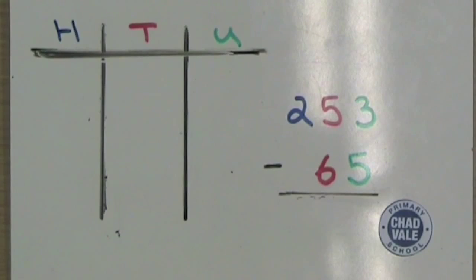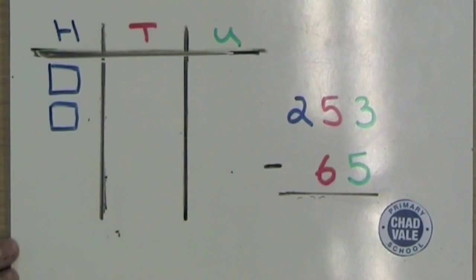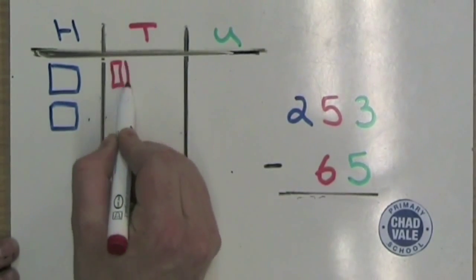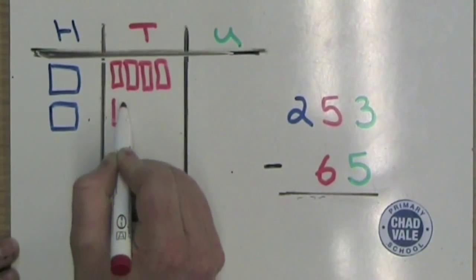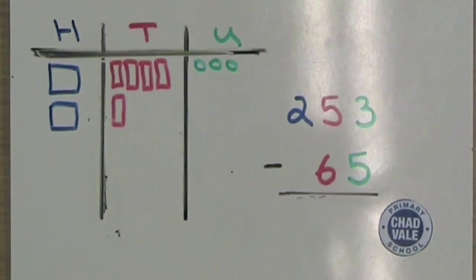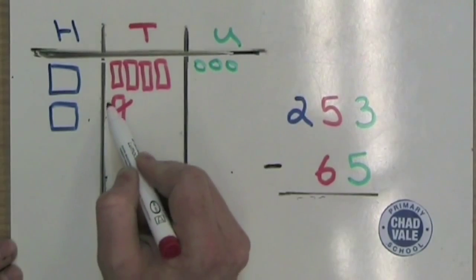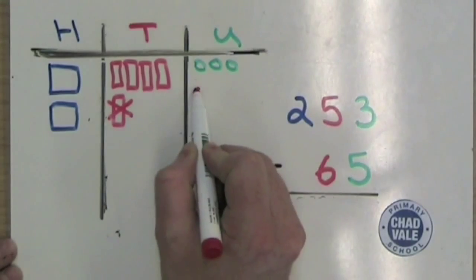Our final problem is 253 subtract 65. Firstly we draw 253: that's 200, five tens, and three units. We then think: three units subtract five units — we obviously can't do this, so we cross out a tower of 10 and break it up into 10 units, drawing them in the units column.